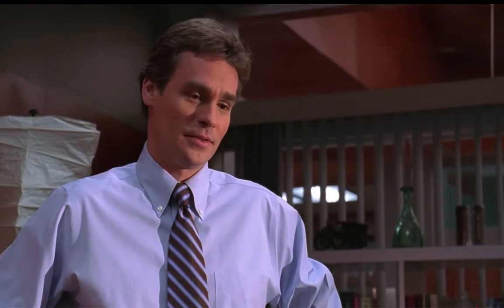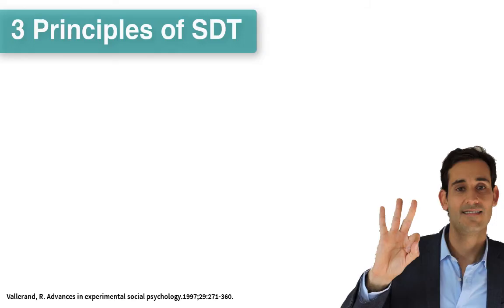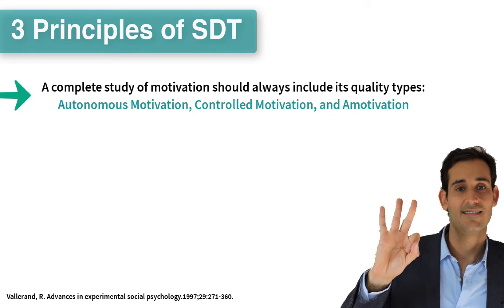Life is more complicated than who gets to the finish line first — and these different reasons have implications at the behavioral, cognitive, and affective level. So it is important not only to get to that hypothetical finish line, but also how we get there. SDT postulates that a full study of motivation must always include consideration of the quality of students' motivation — that is, including students' autonomous motivation, controlled motivation, and amotivation — all of which will be described in this video.